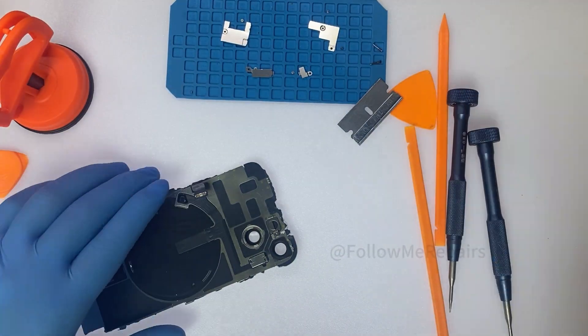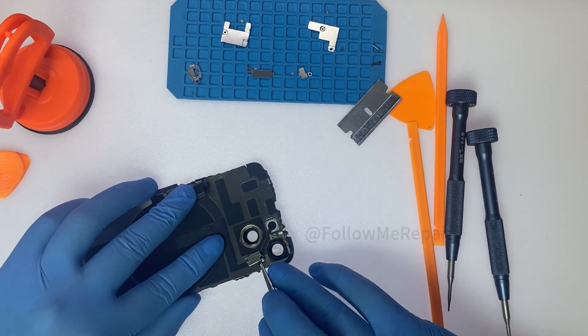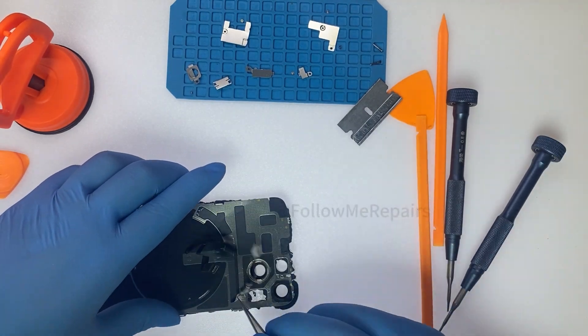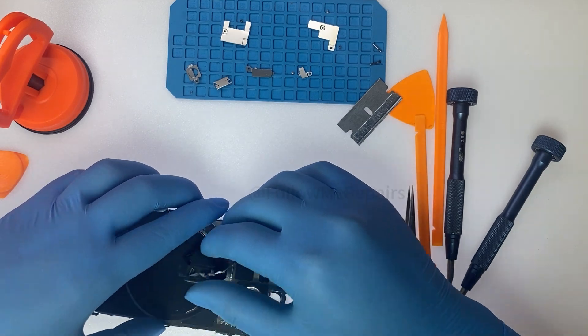Remove components from the old phone back cover. Remove the wireless charging module flexible circuit board from the old phone back cover.